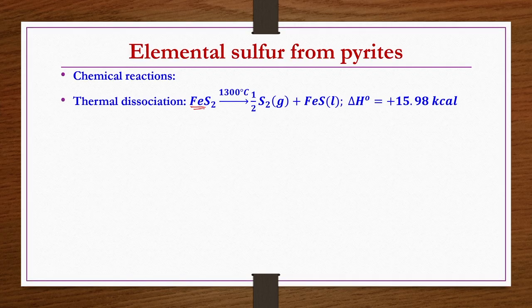Under this third method of elemental sulphur production from iron pyrites, the chemical reactions begin with thermal dissociation. FeS2, the primary component of iron pyrites — iron disulphide — when thermally dissociated at high temperature around 1300°C, yields disulphur gas, which is highly active, and iron sulphide in liquid droplet form.